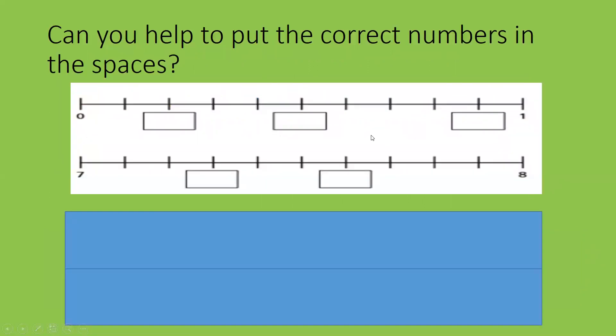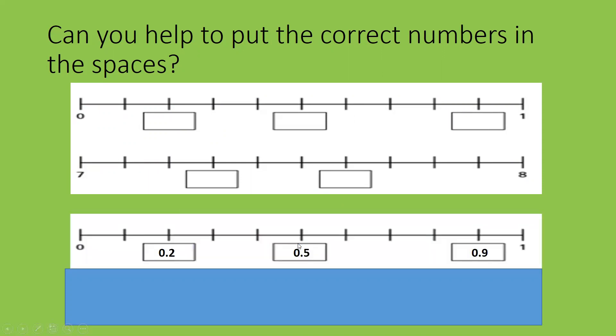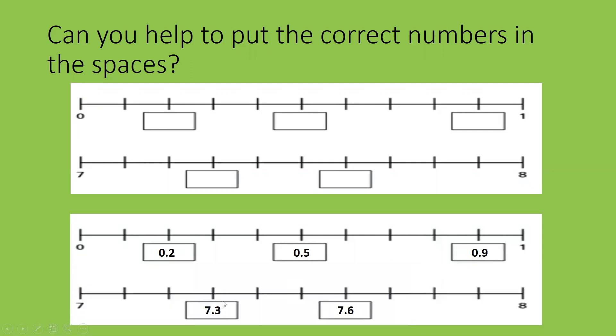Can you help to put the correct numbers in the spaces? If we start at zero, end at one. We know that they're divided into tenths. What do you think the first one is? And the second? And the third? How about from seven to eight? What about the first box here? And the second box? For zero to one, if you said that it was 0.2, 0.5, and 0.9, well done. And on the last example, if you said it was 7.3 and 7.6, well done.